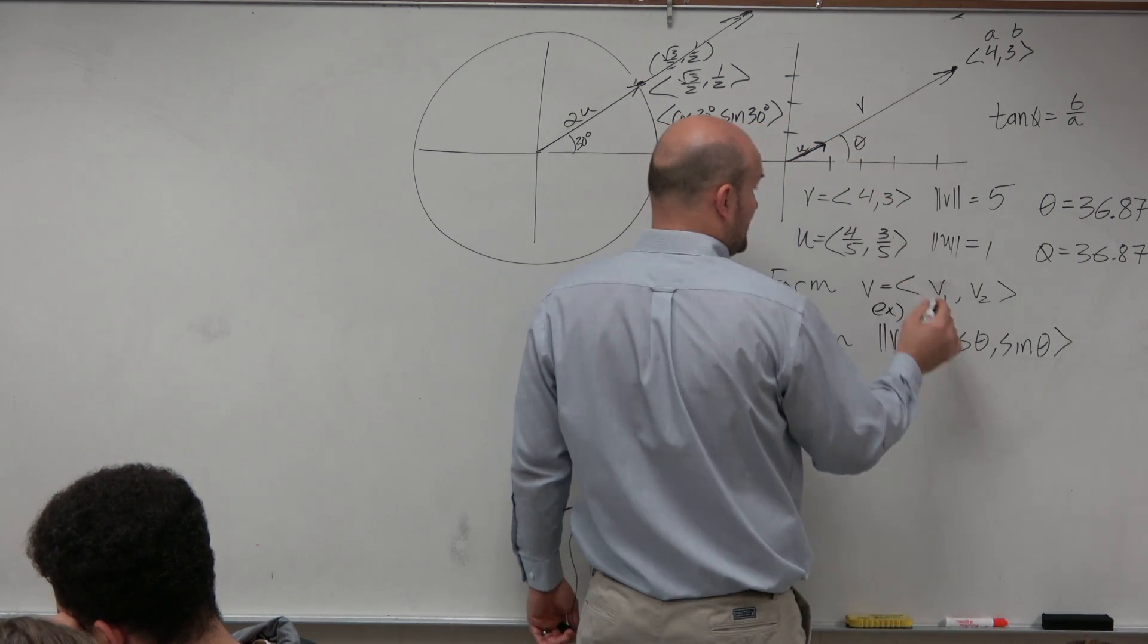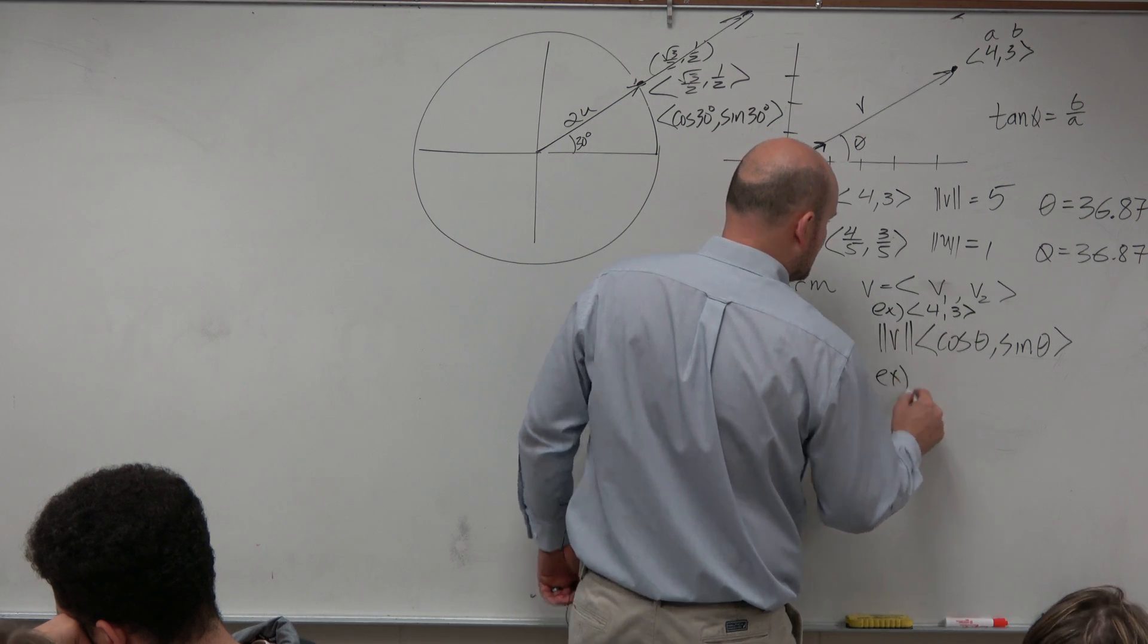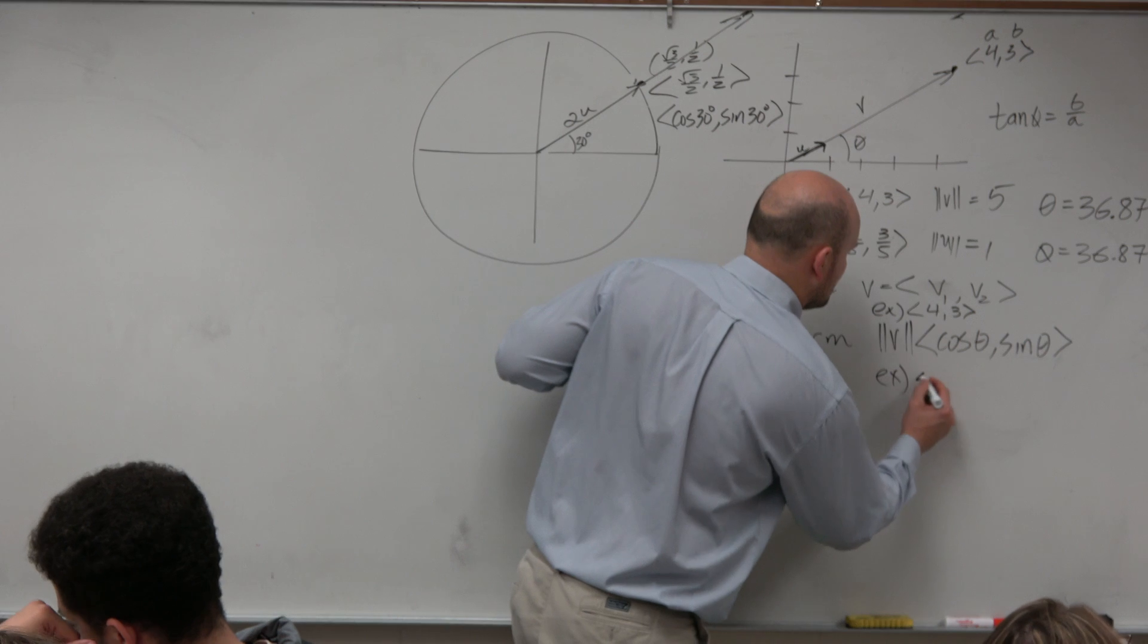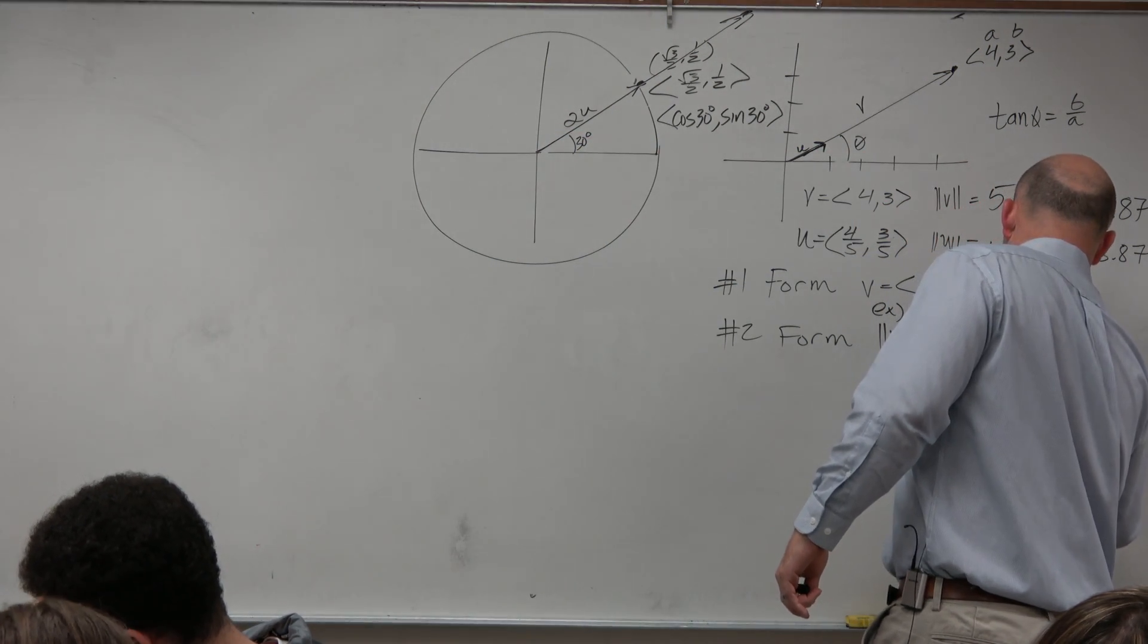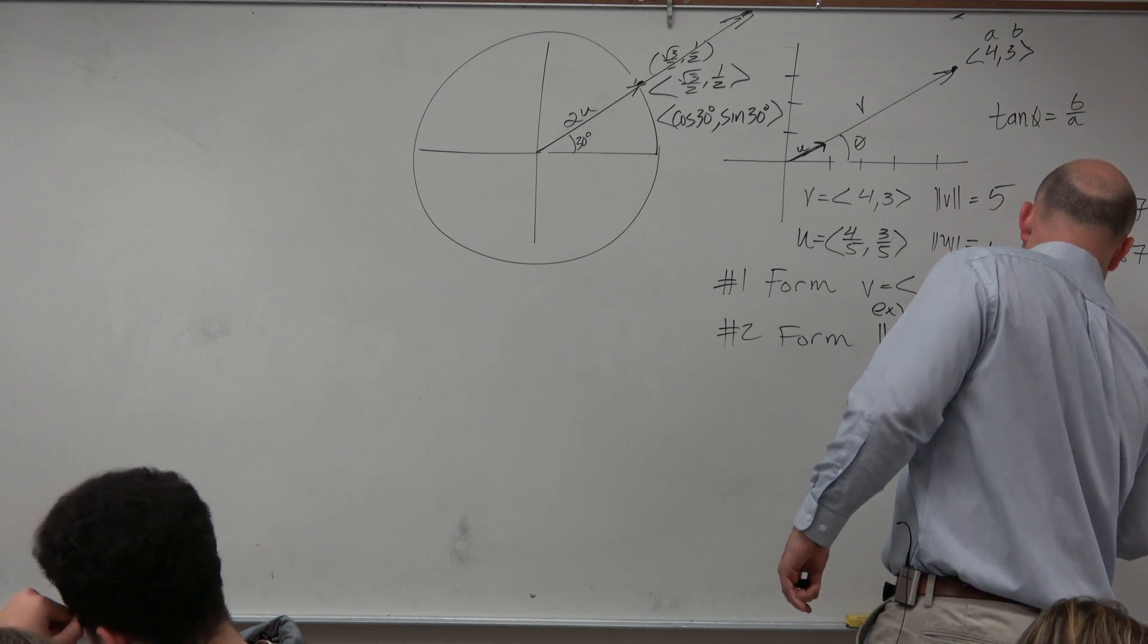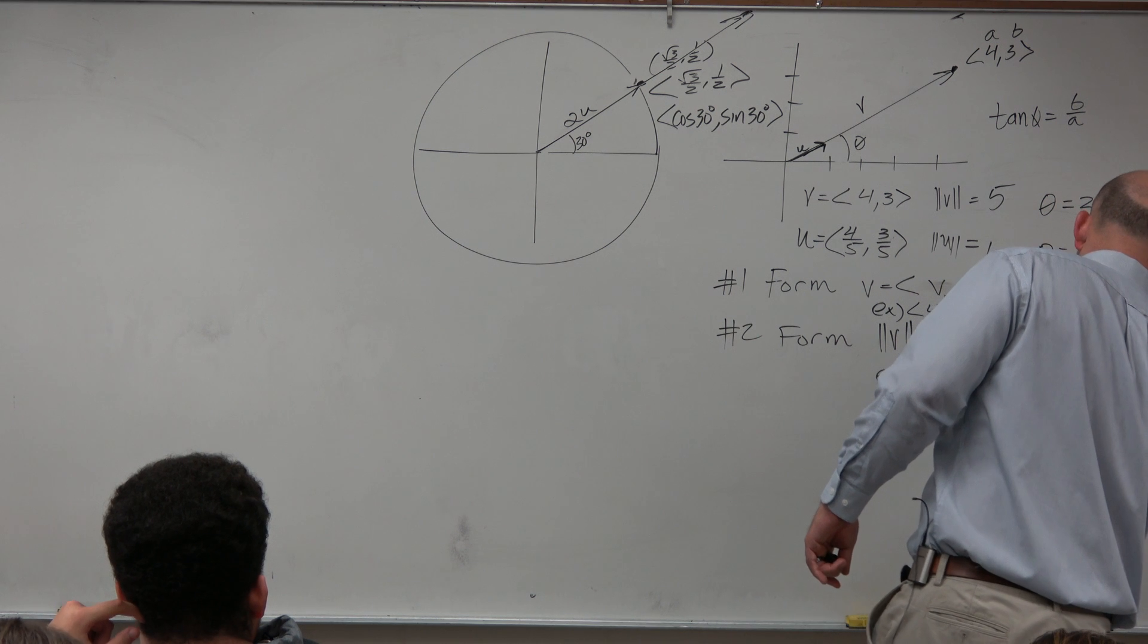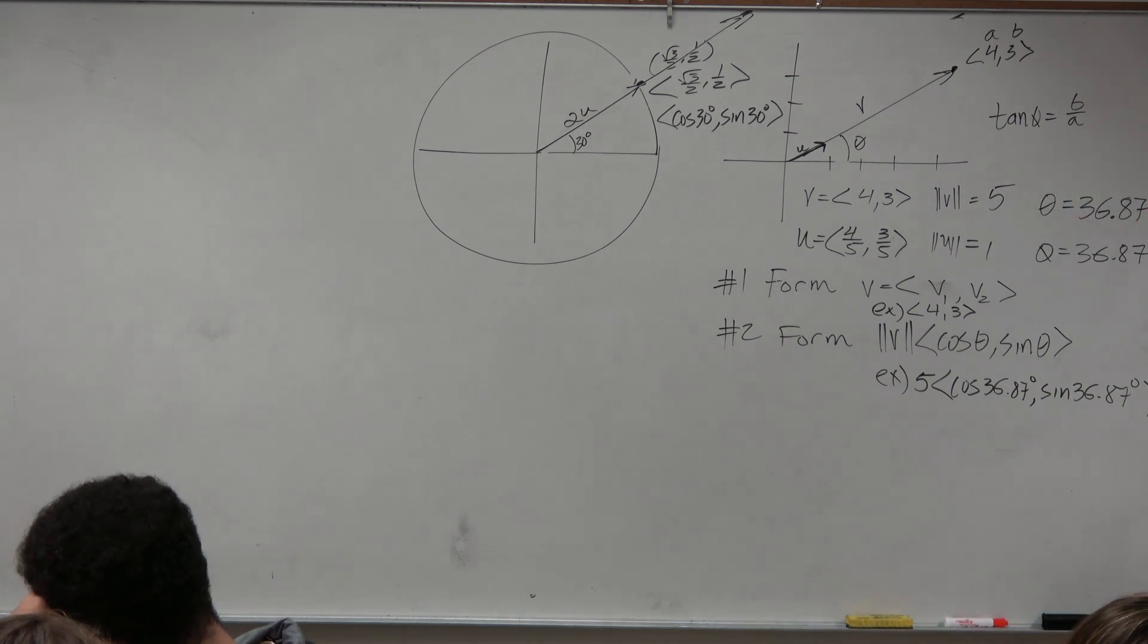So our example here is 4, 3. So our example here is, what is the magnitude of V? 5. And then what is our angle? 36.87. So it's 5 cosine of 36.87 degrees, comma, 5 sine of 36.87 degrees.